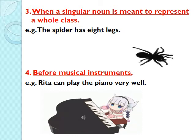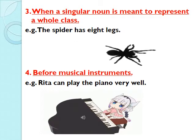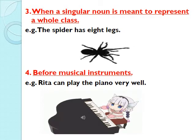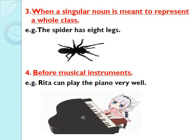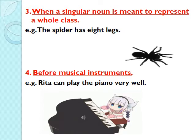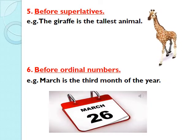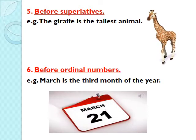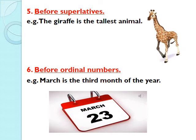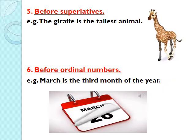Article THE is also used before the names of musical instruments. For example: 'Rita can play the piano.' Here, piano is expressed not as one piano but as a category of pianos — it means Rita can play any piano very well. We also write THE before superlatives. For example: 'The giraffe is the tallest animal.' The word tallest is a superlative degree, therefore we put article THE before it.